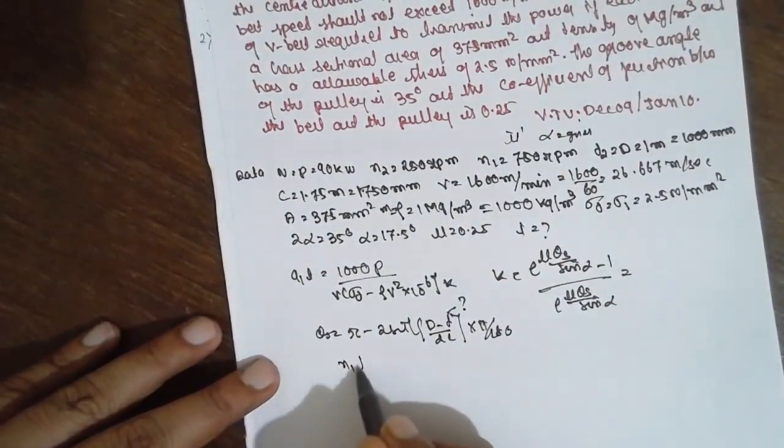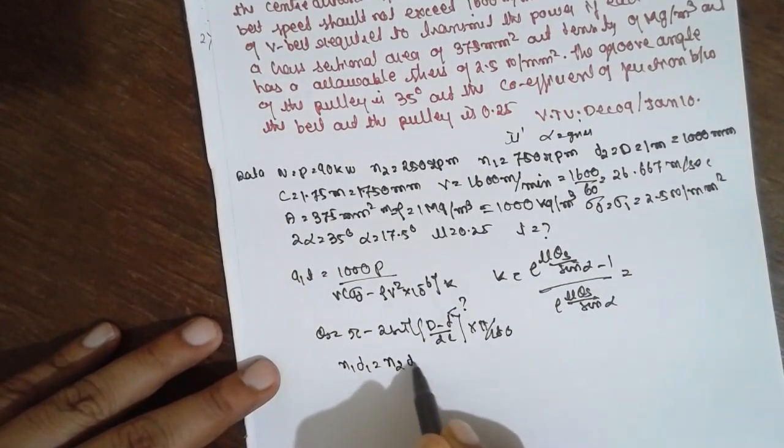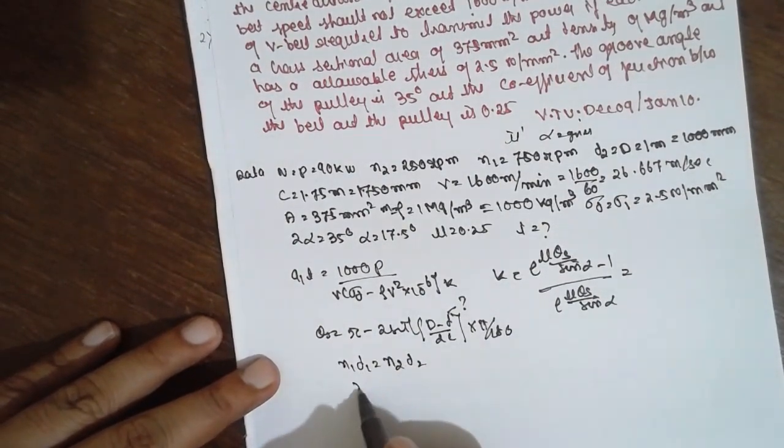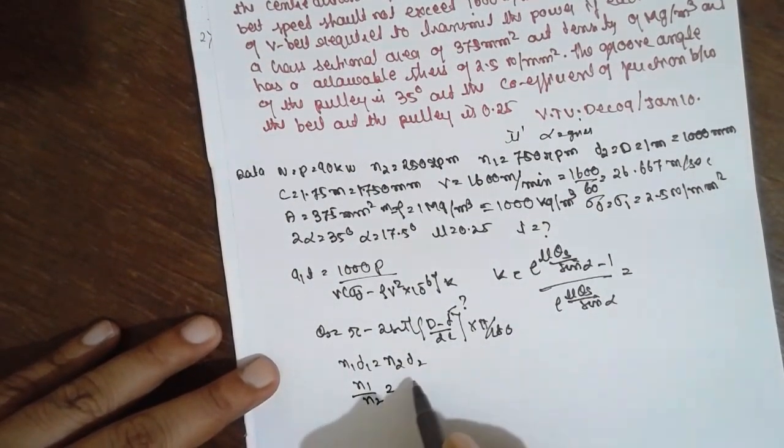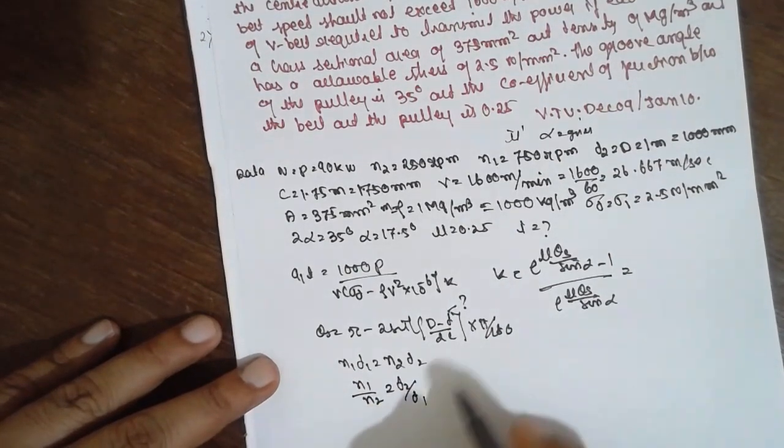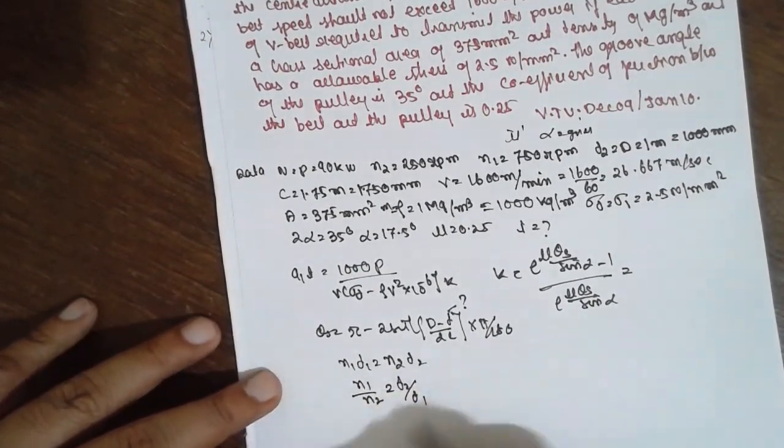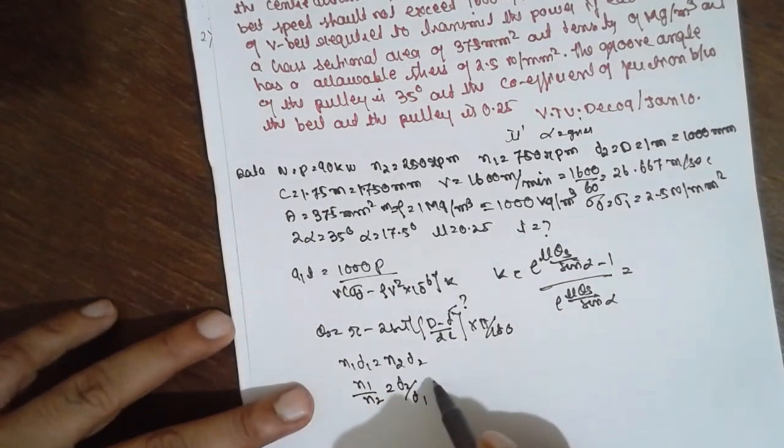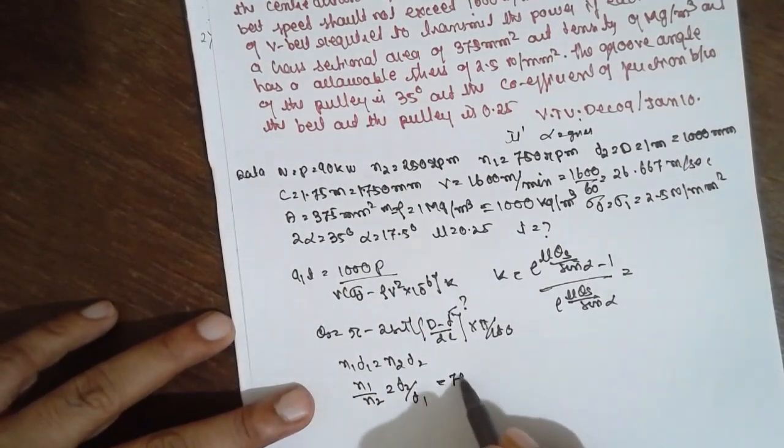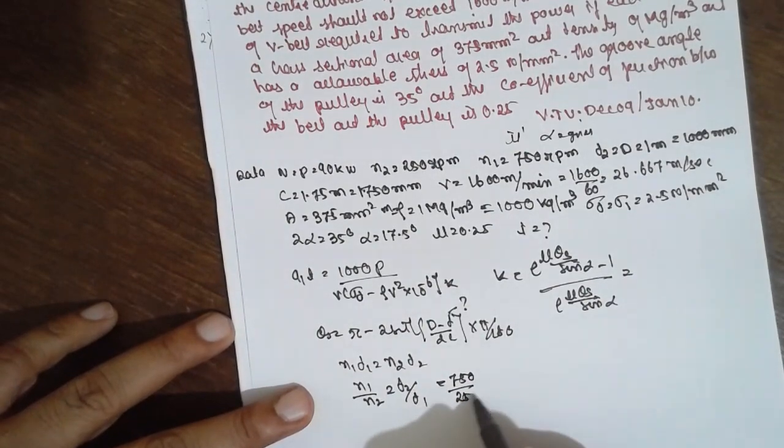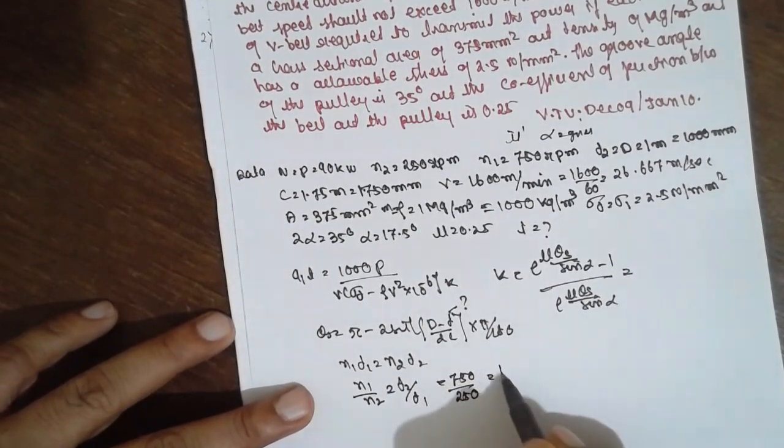How to find out this one? N1 d1 is equal to n2 d2. Once you know n1 and d1 you will get the answer. Now I will go in reverse manner. First I will find out 750 divided by 250 into 1000 divided by d1.